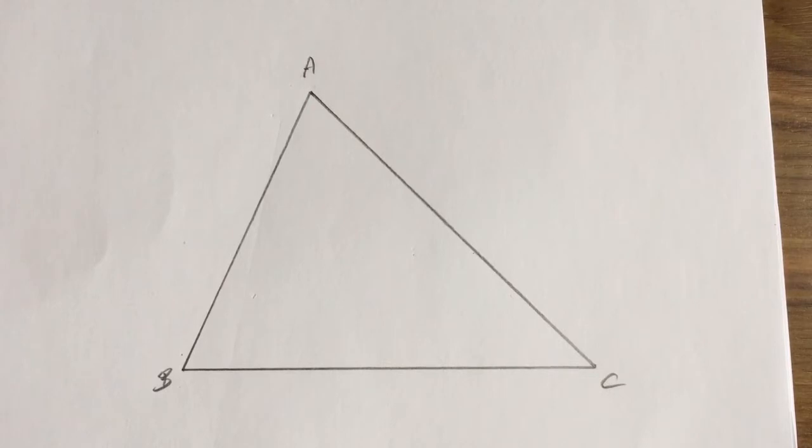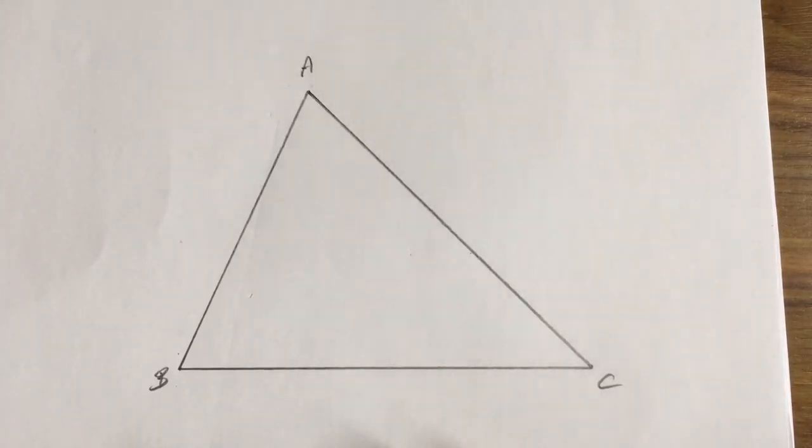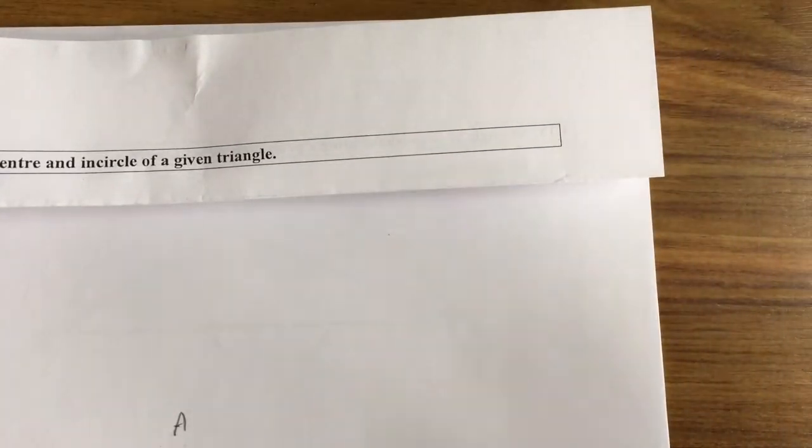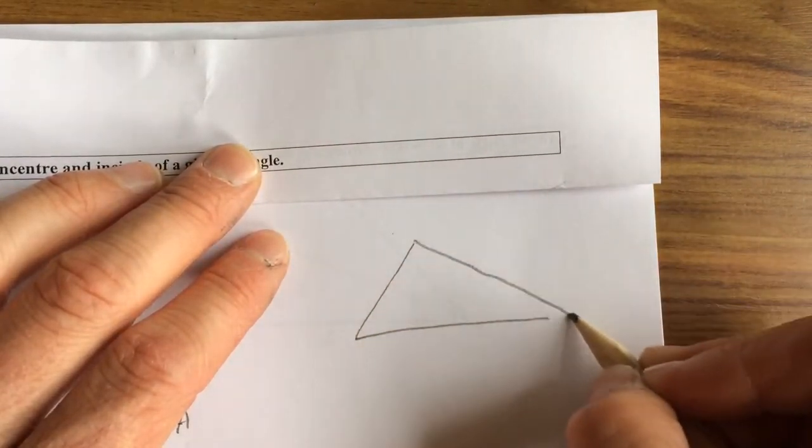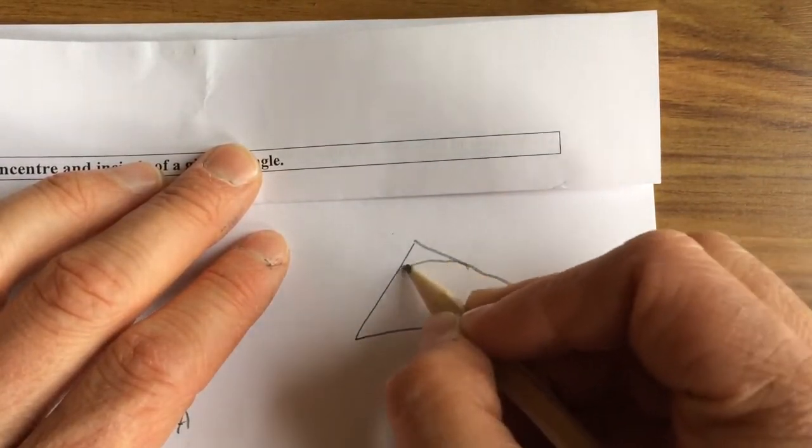Now before we start, we need to know what the word incircle means. If we come up here and draw a quick sketch of a triangle, the incircle will be a circle that is inside the triangle and touches the three sides.